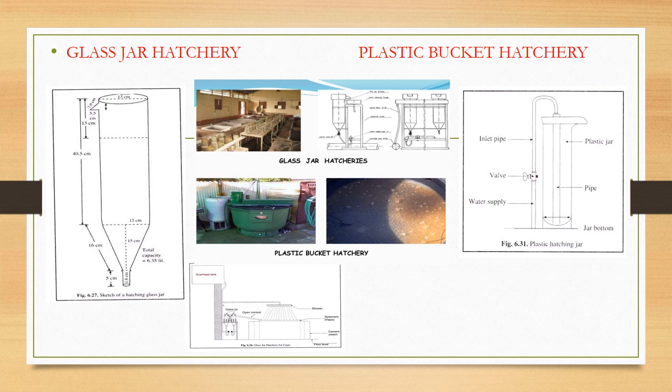Plastic bucket hatchery is made up of two parts: an outer plastic bucket and an inner plastic bucket. The outer plastic bucket is made of aluminum and the inner plastic bucket is made of galvanized iron sheet. The plastic bucket has three outlets and its capacity is 40 to 50 liters.